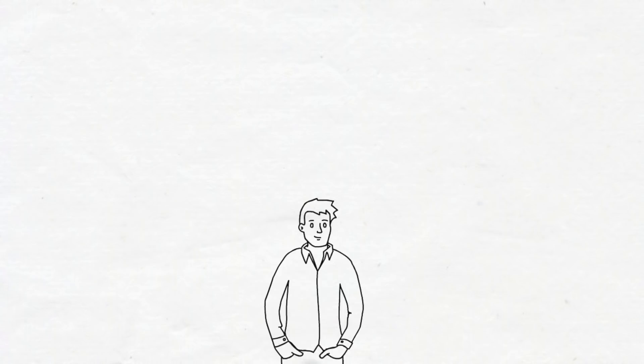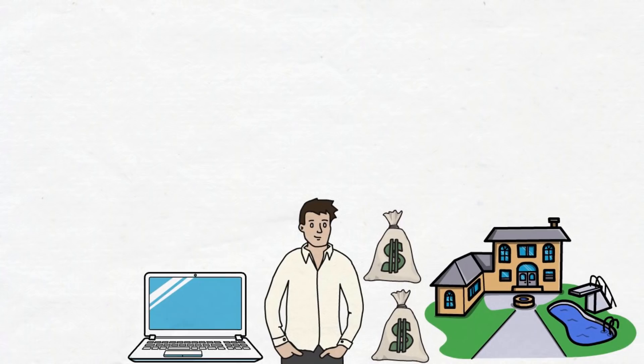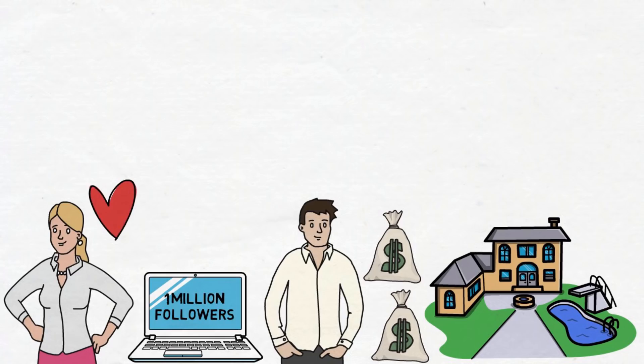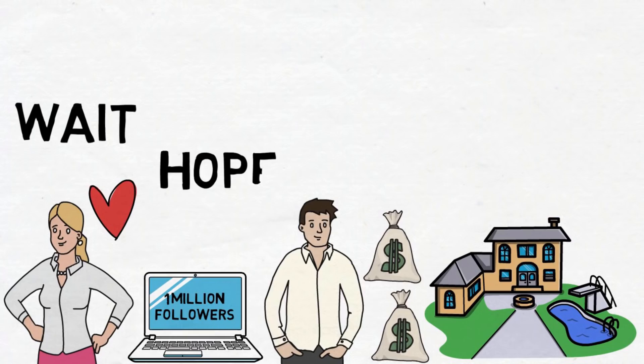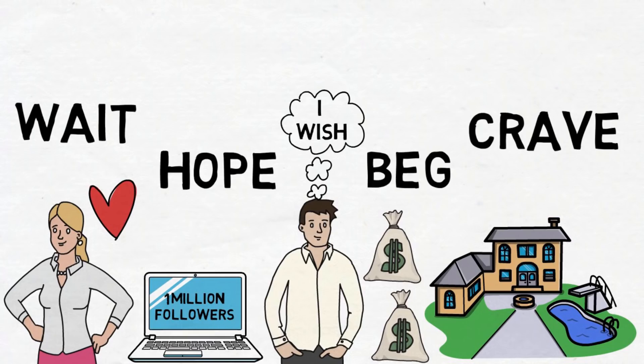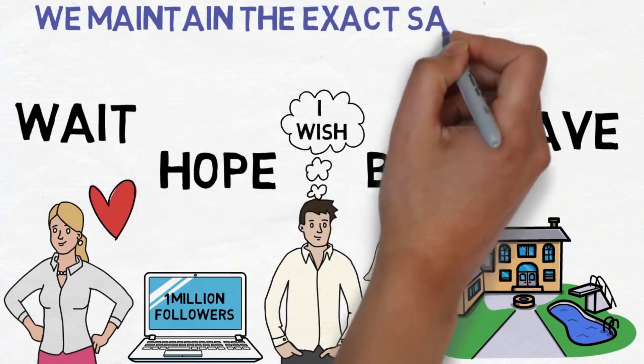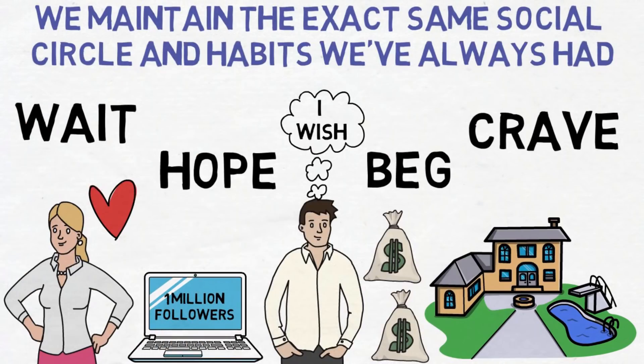We often desire the things we do not control, like more money, a better job, a bigger house, a massive social media following, or maybe that our partner will always love us, that we always have the loyalty of our friends. We sit around waiting, hoping, begging, craving, wishing for luck to strike, or change to happen, while we maintain the exact same social circle and habits we have always had.